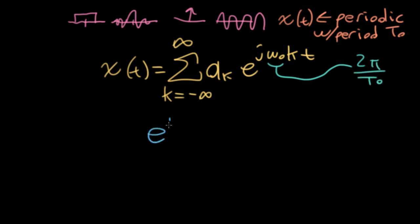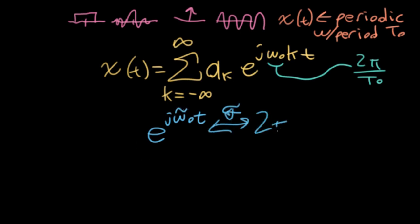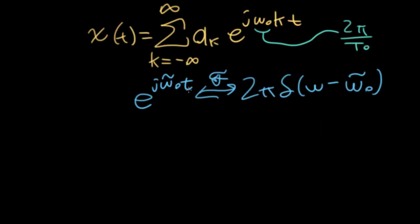So we've already found out that e to the j omega naught tilde t, where this omega naught is a generic omega naught, not necessarily the omega naught that's up here. So let me put a tilde over it. Fourier transforms into 2 pi delta omega minus omega naught tilde. And here I put a tilde on it to make sure I don't get it mixed up with this up here.